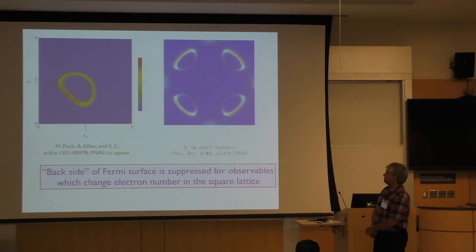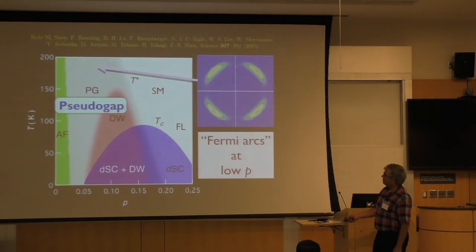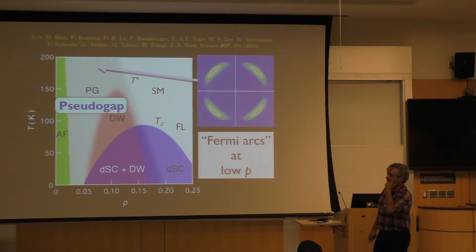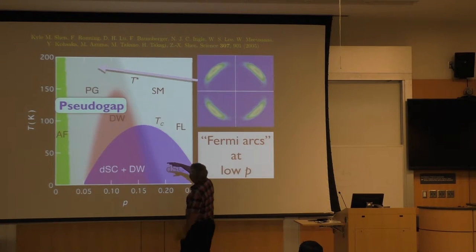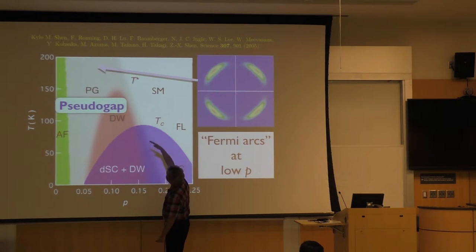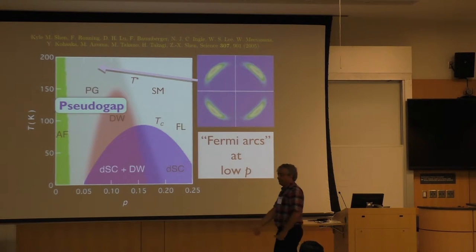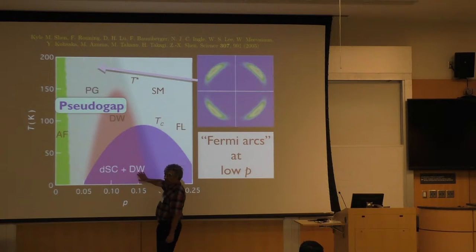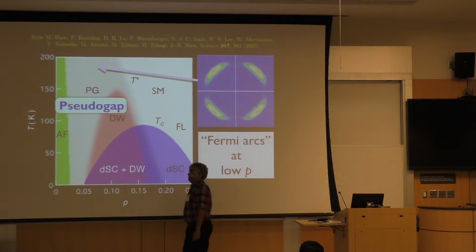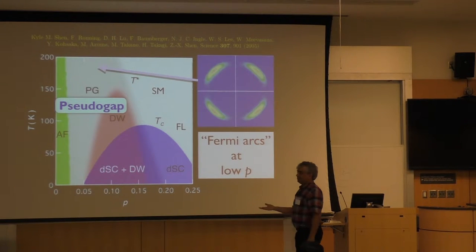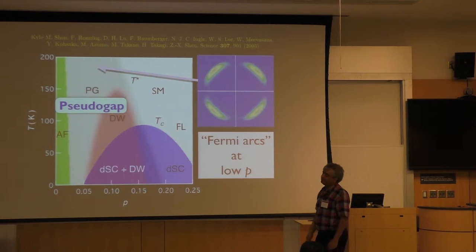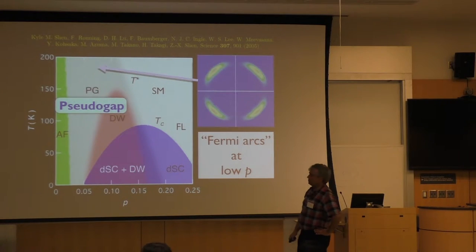Ideally what I'd want is to take a really pure sample and then go to these high temperatures and then measure quantum oscillations. Of course, when I mention that to my experimentalist friends, they say that's impossible. You want some material which is clean enough where you can push TC down by some trick, and then work up there so that the magnetic field doesn't induce any density wave order. We have beautiful quantum oscillations at low temperatures but those are clearly infected by the density wave. The question is what's happening up there.